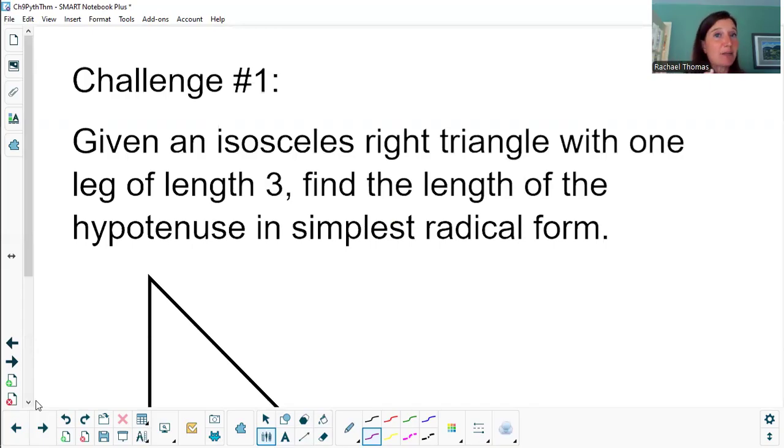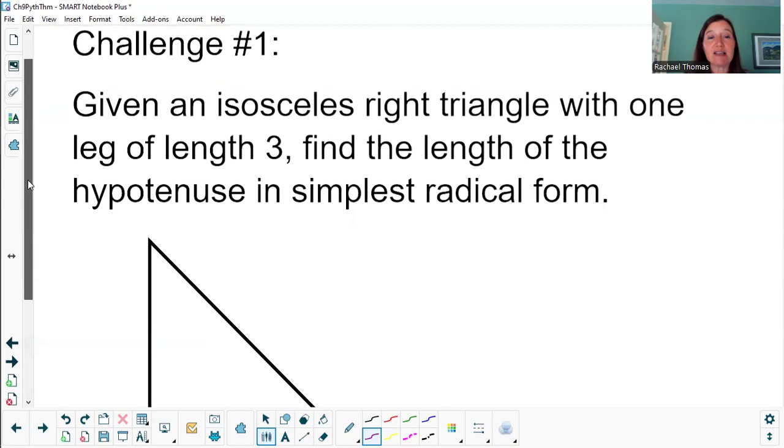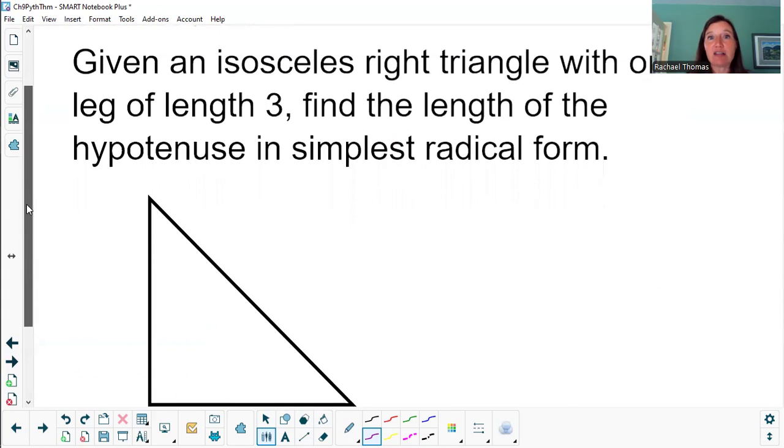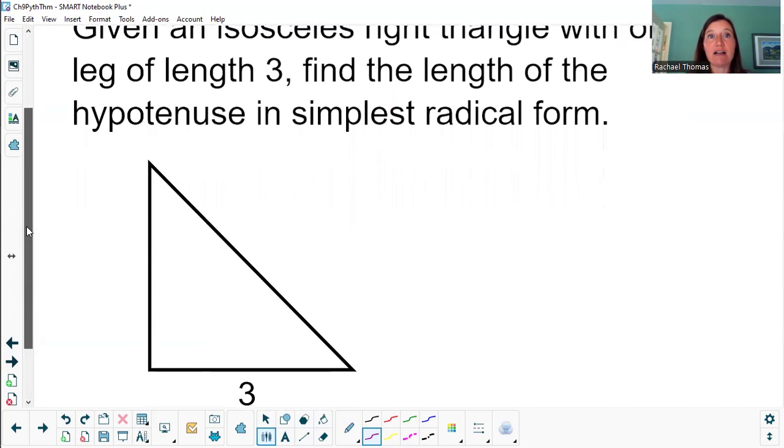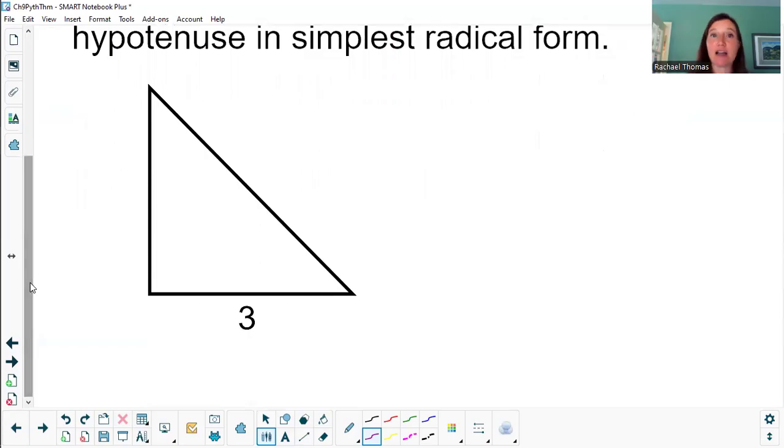Here's the interesting thing about special right triangles. We're going to find all of the sides knowing just one. So our first challenge to develop this idea is going to be, if I give you an isosceles right triangle and I have a leg of length 3, can I find all of the other sides of this triangle?